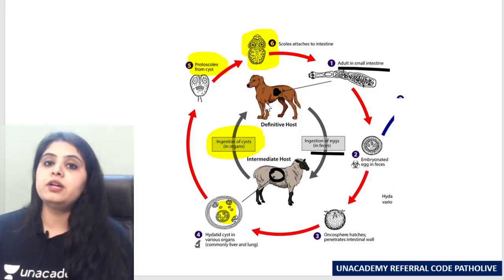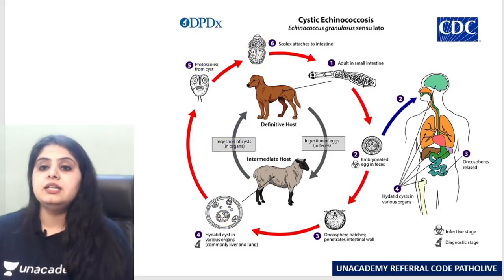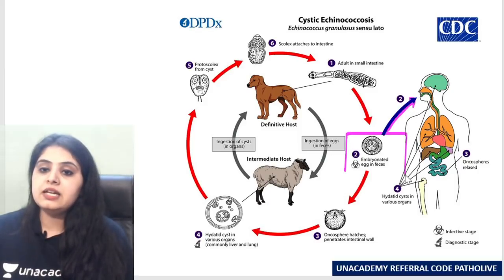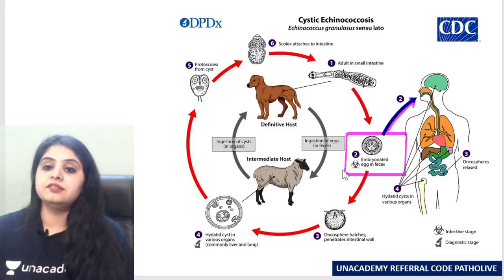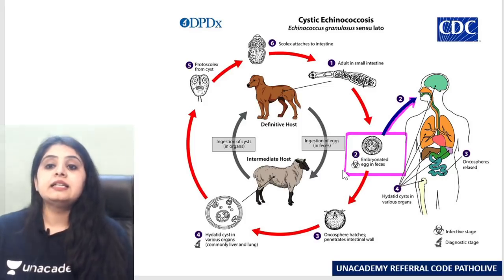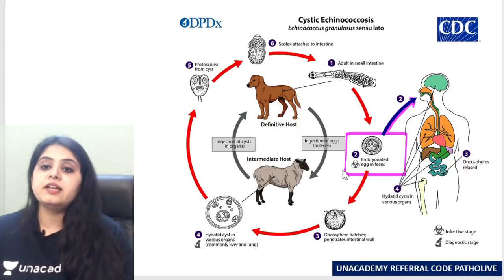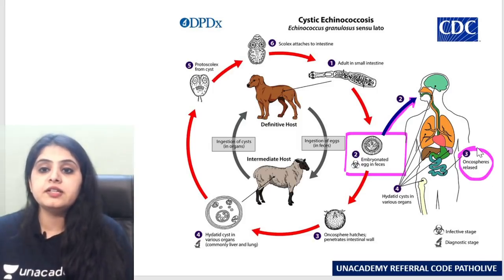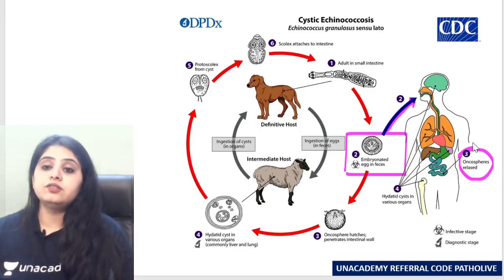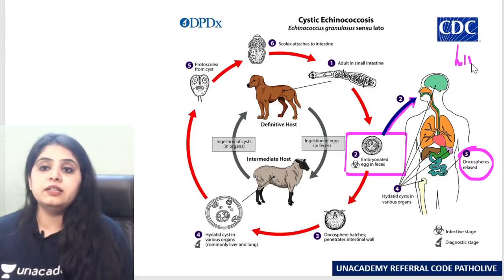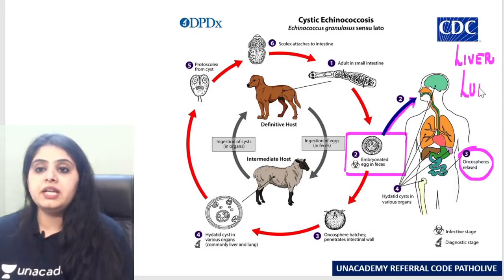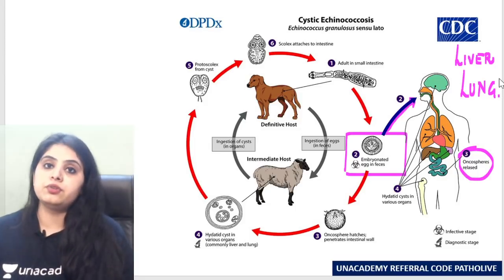We happen to be the accidental host. If we accidentally end up ingesting these embryonated eggs through contaminated food and water, the eggs go into our intestine, the oncospheres are released, and hydatid cysts form in various organs. The most important two organs are the liver and the lung — yes, the brain can also be involved, but liver and lung are the two most important sites.